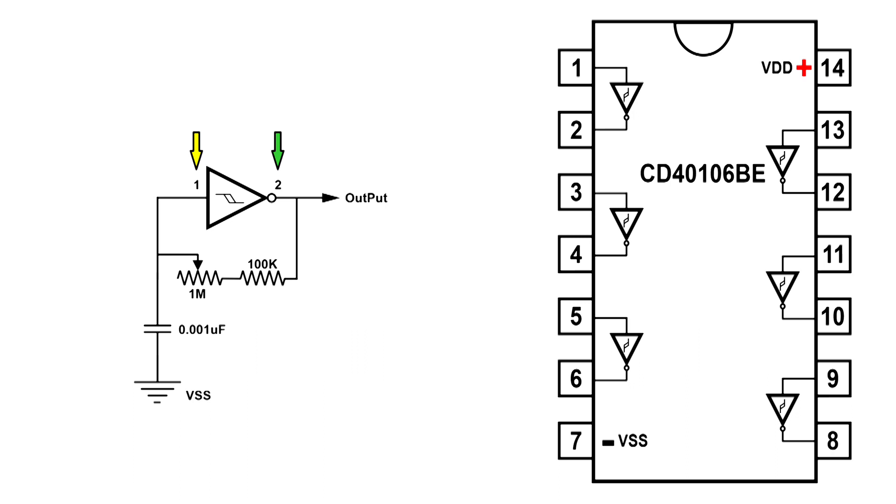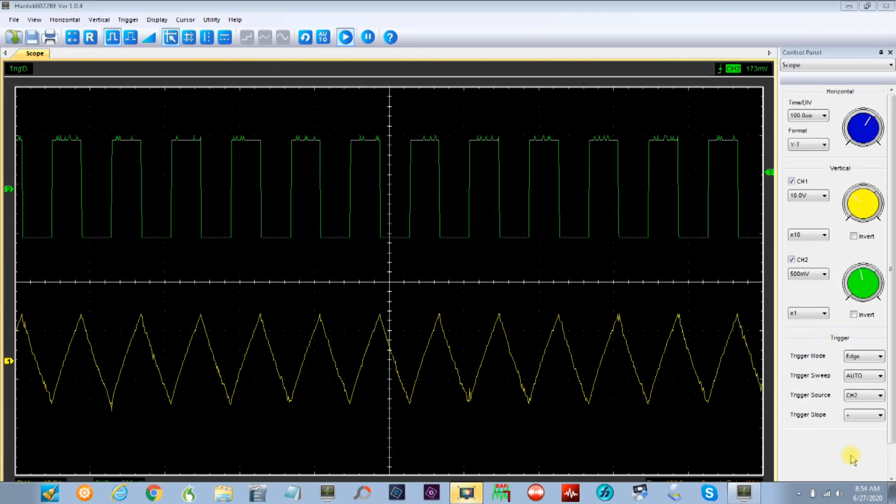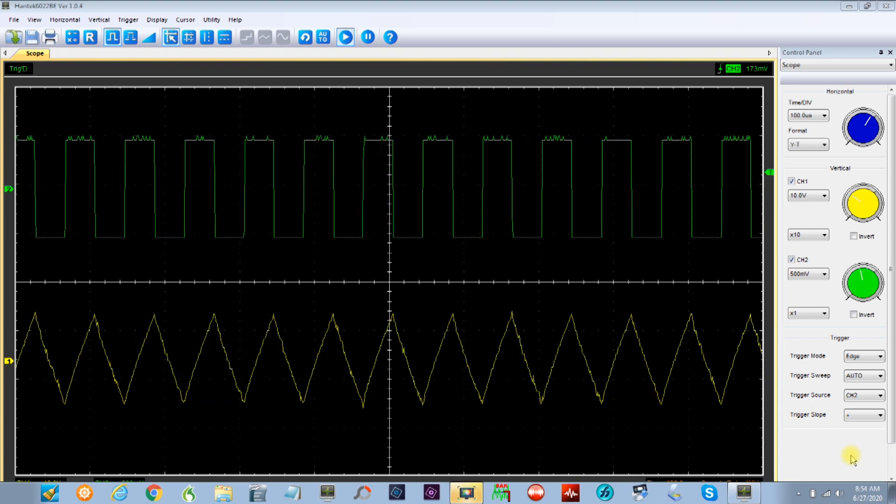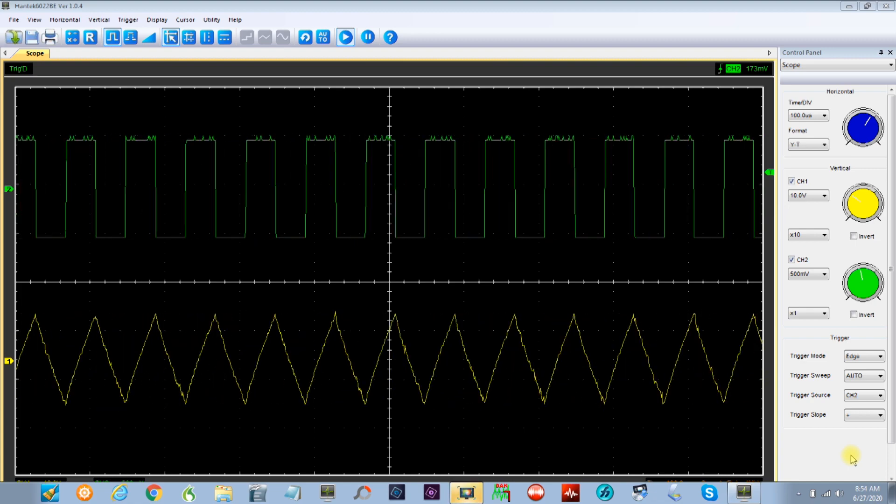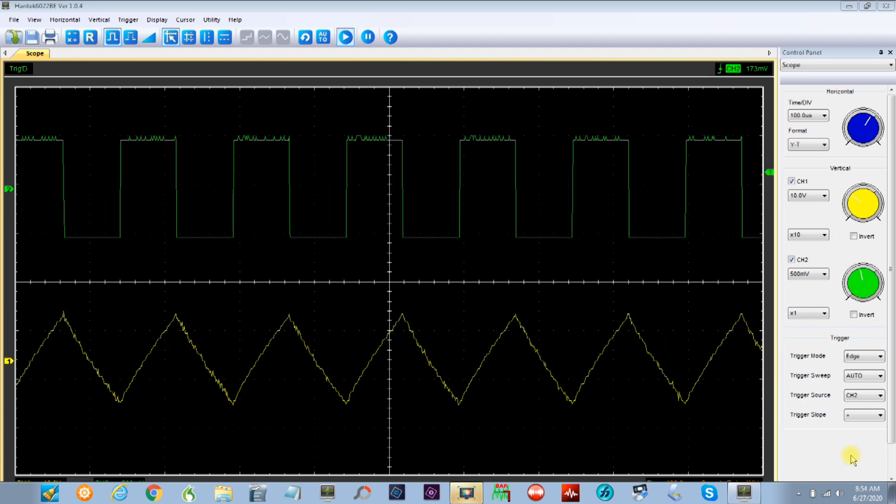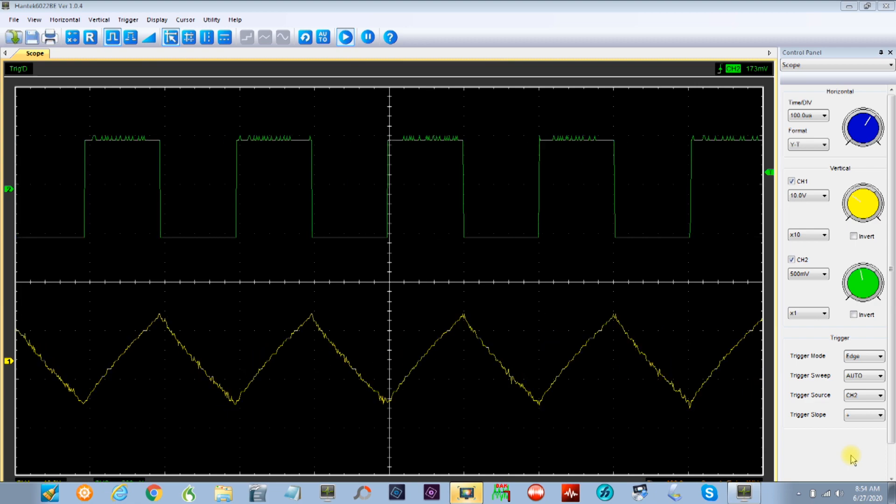Now some of you might be wondering if there's a signal at pin one. And there is. And this is what it looks like. It's a triangle wave at pin one. And we've got a square wave at pin two. And of course, it varies with that 1 meg ohm resistor.